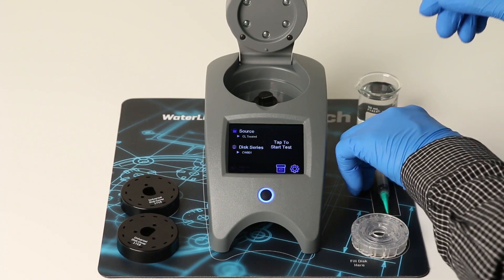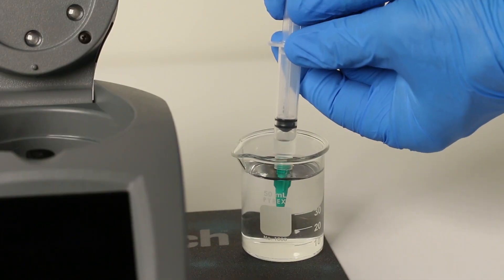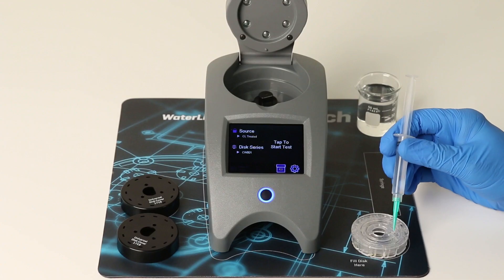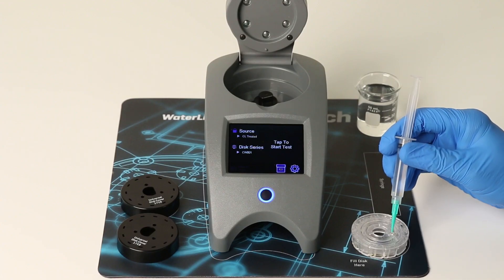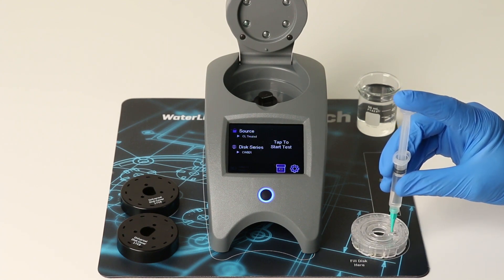Use the syringe to fill the disk with the water sample. Place the disk on a clean, dry surface. A dark surface helps you better see the sample as you fill, and be sure to hold the syringe vertically.